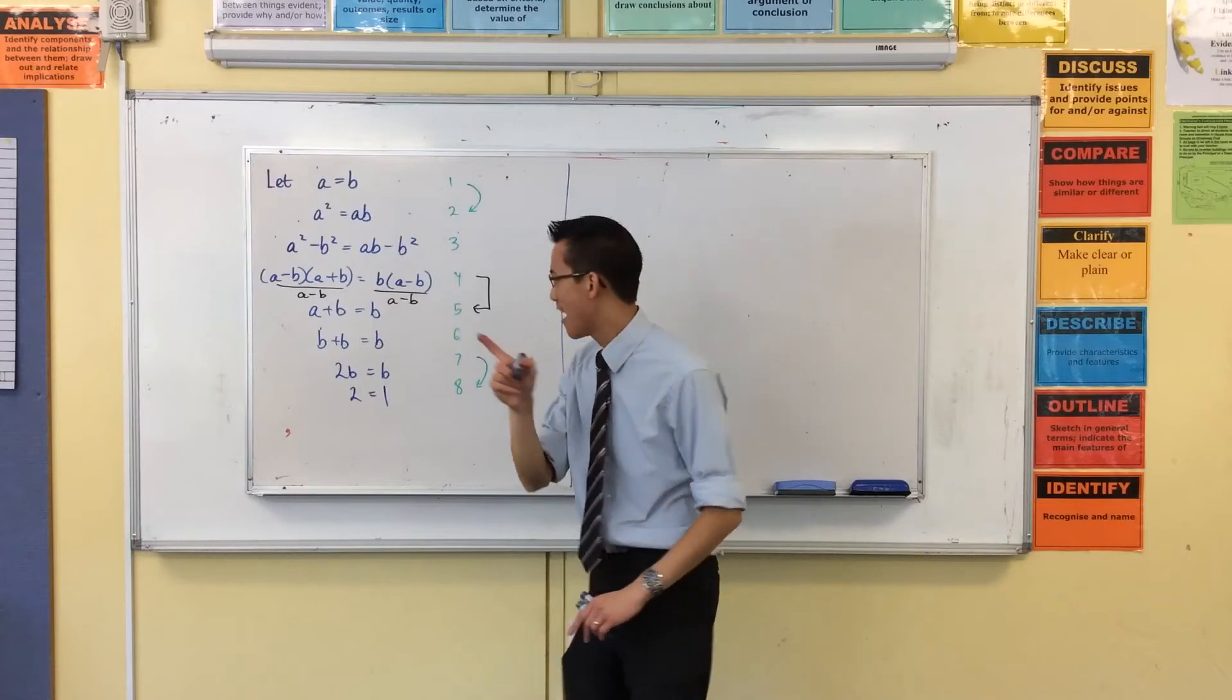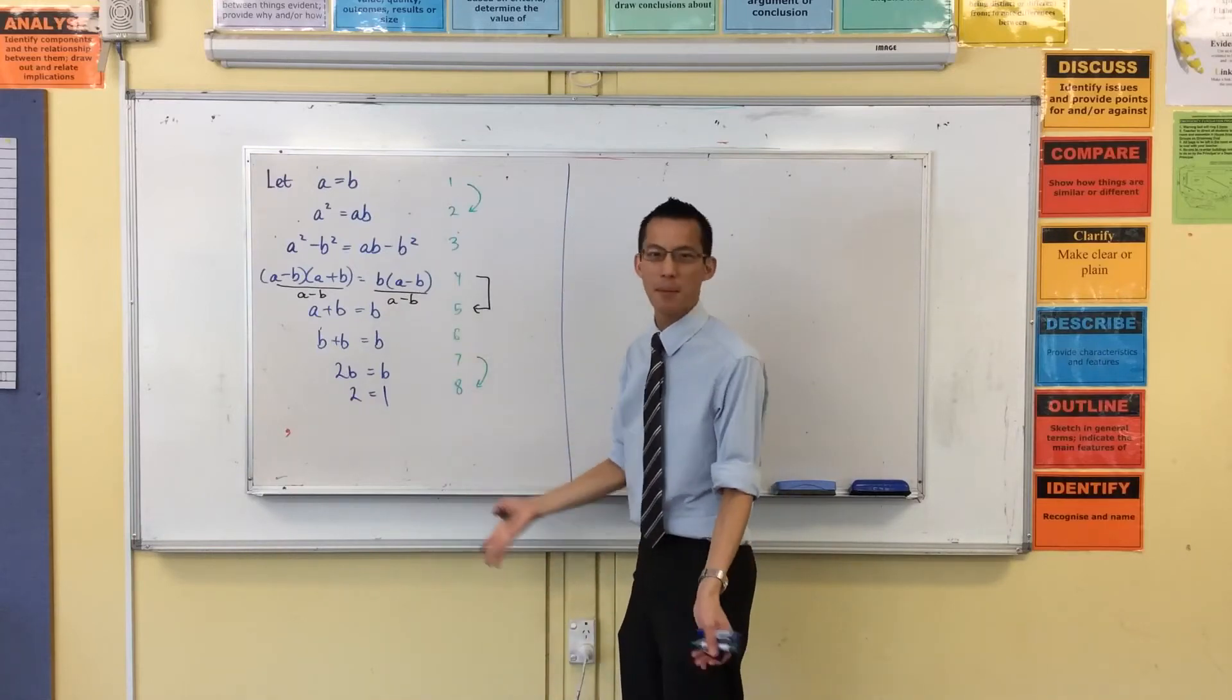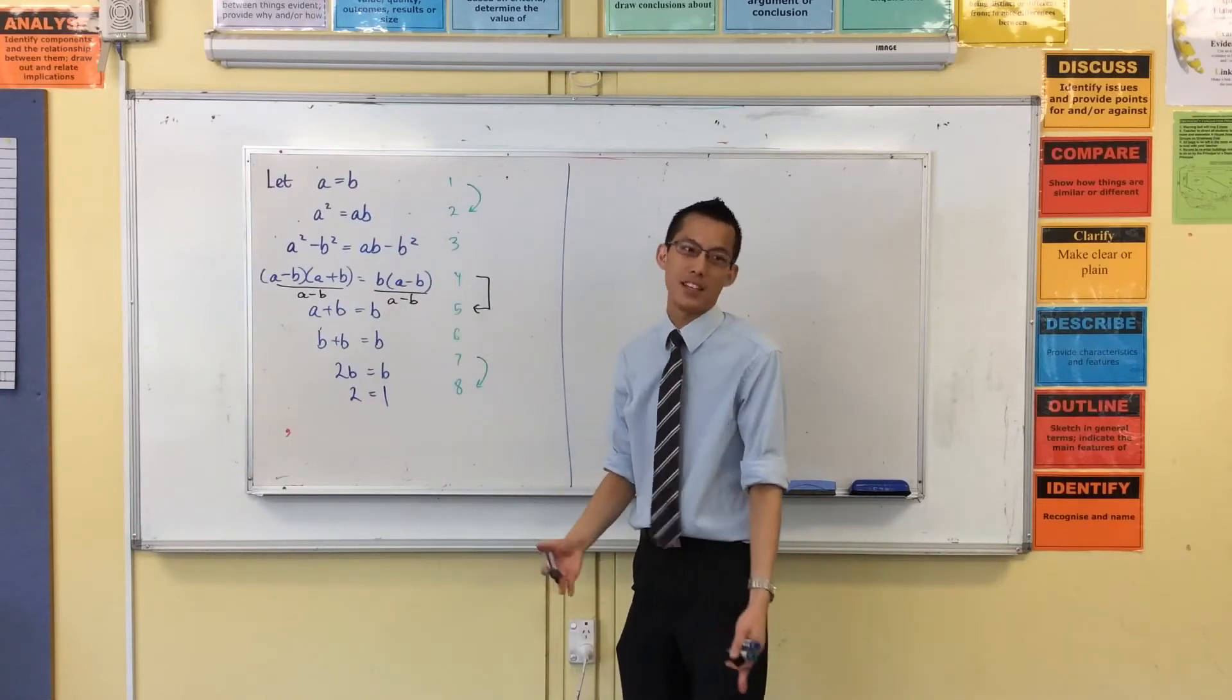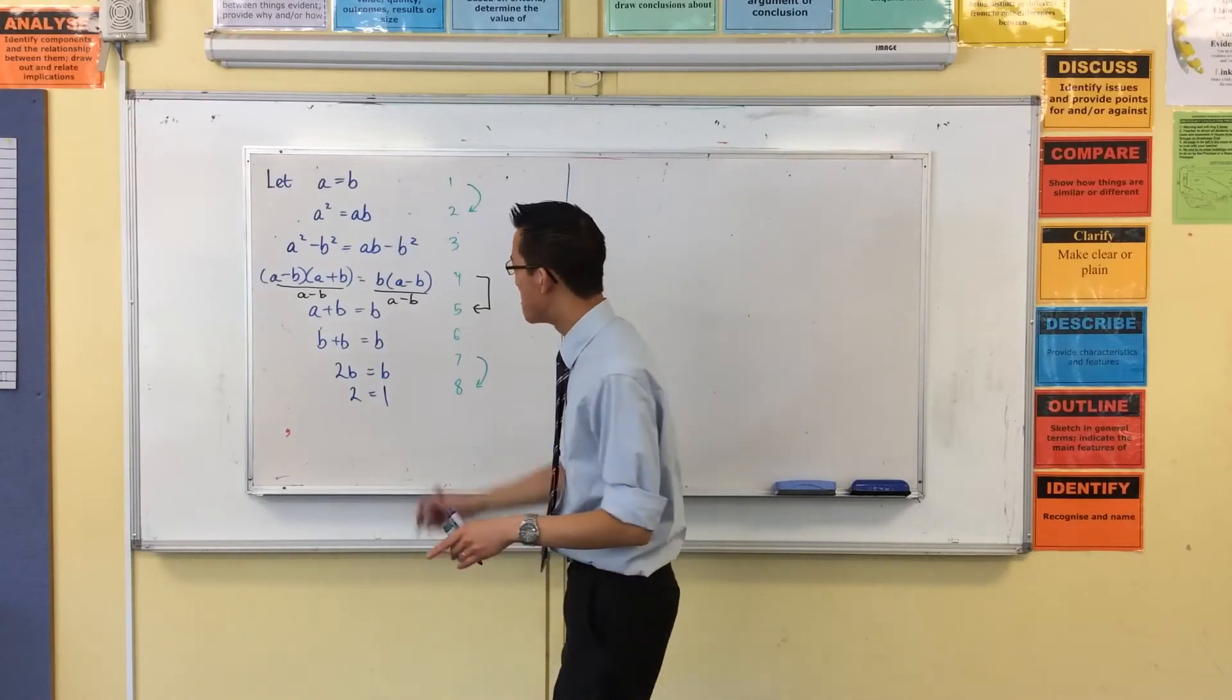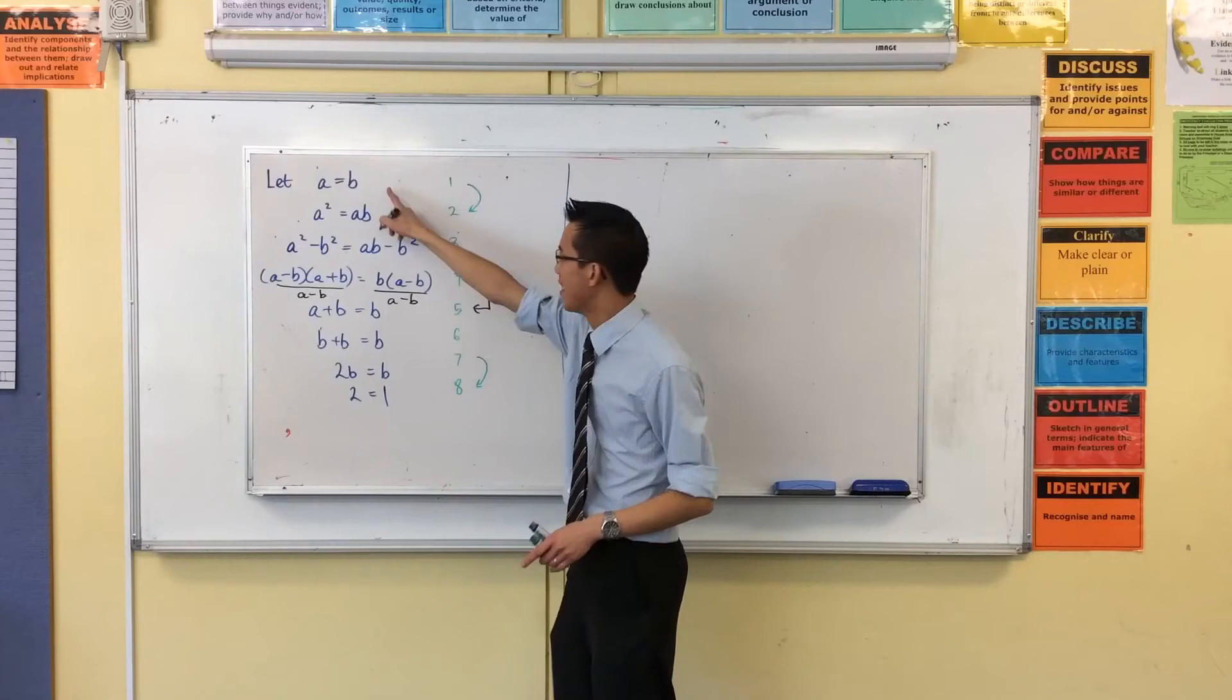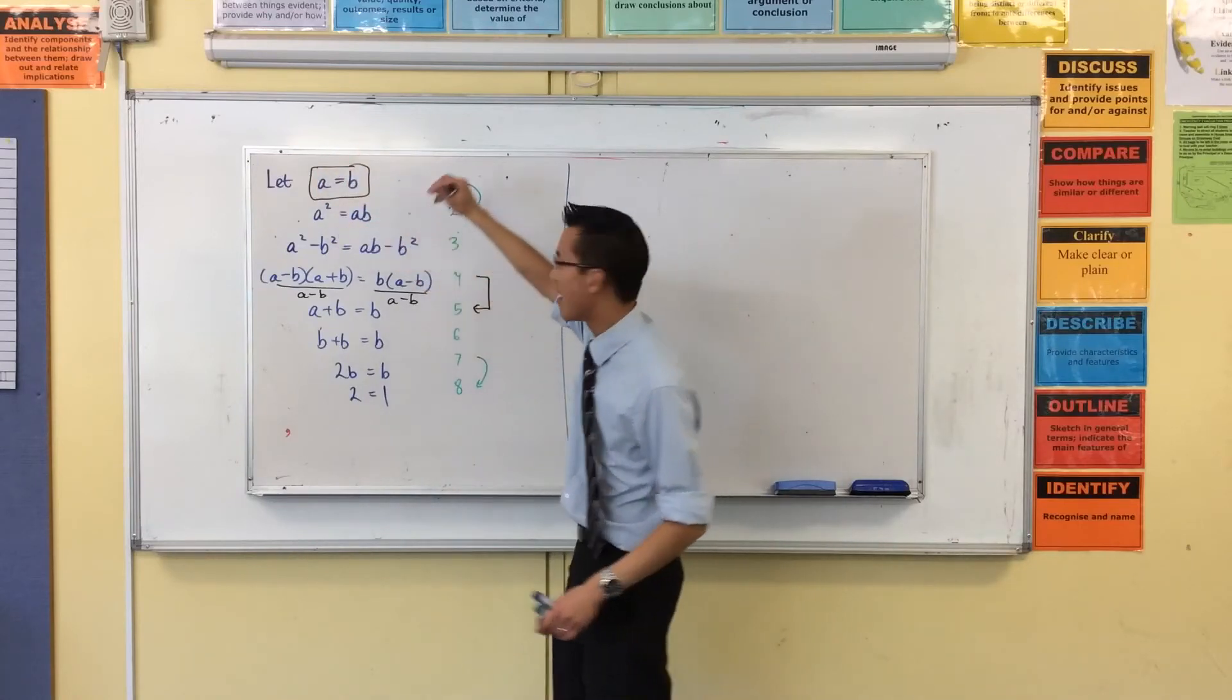But that's sneaky. What's the reason why you can't divide by A minus B? What is A minus B? You'd think, I don't know, because A and B are random numbers. They're not random numbers. They're equal numbers. So if you look at this line, which is our starting point, our foundation, A minus B is equal to zero.